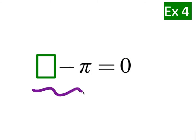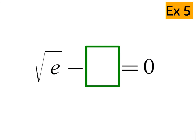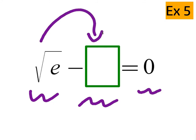What number minus pi gives you 0? It would have to be minus itself — pi minus pi is 0. How about the square root of e? You'd have to be subtracting itself to end up at 0. It's just the same sign, the same number you subtract to end up at 0, no matter how complicated it looks.